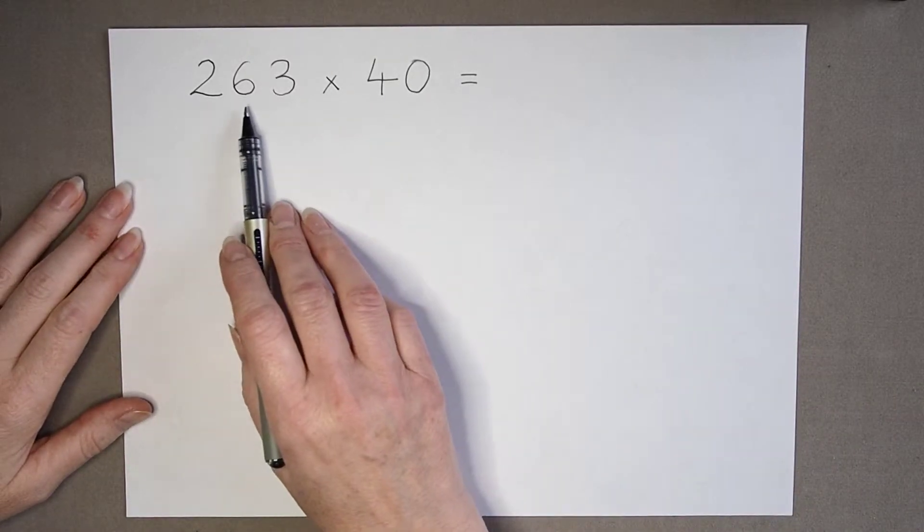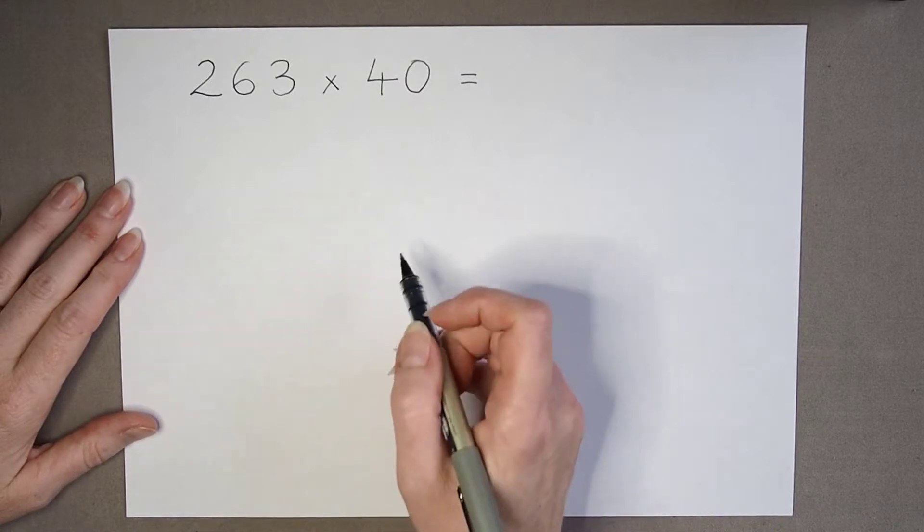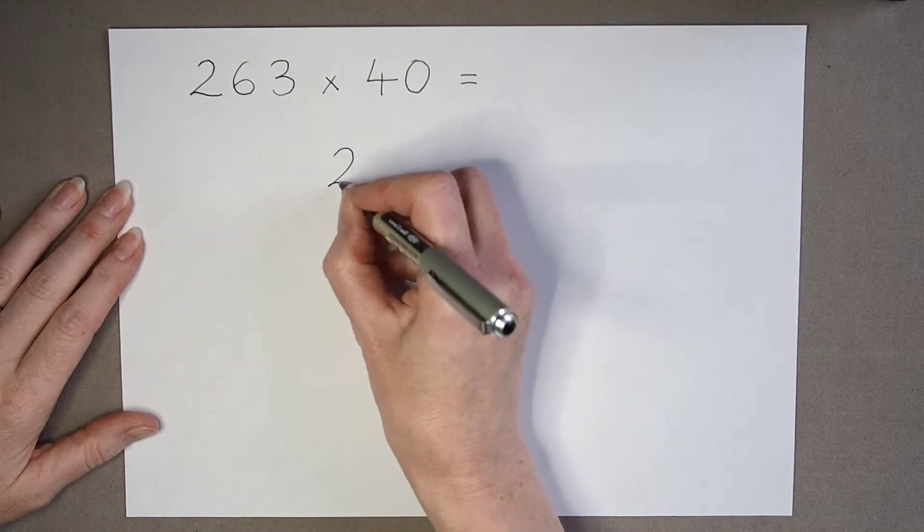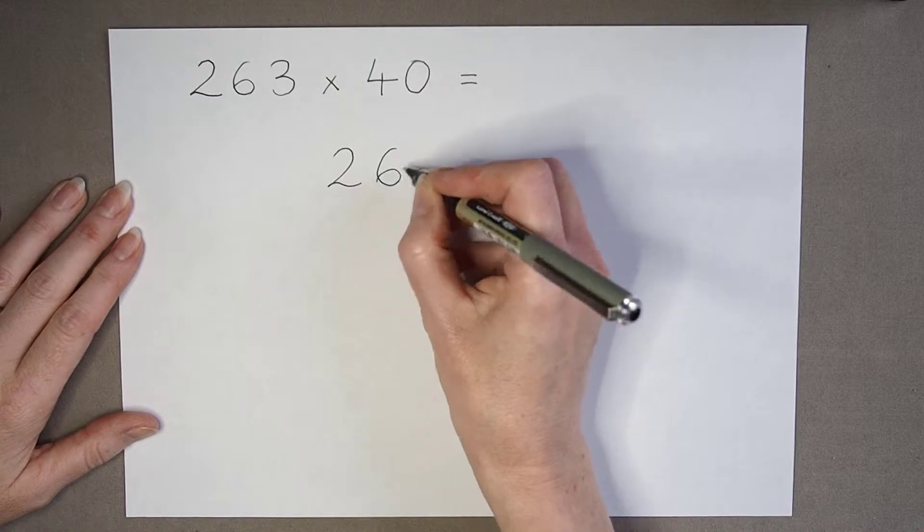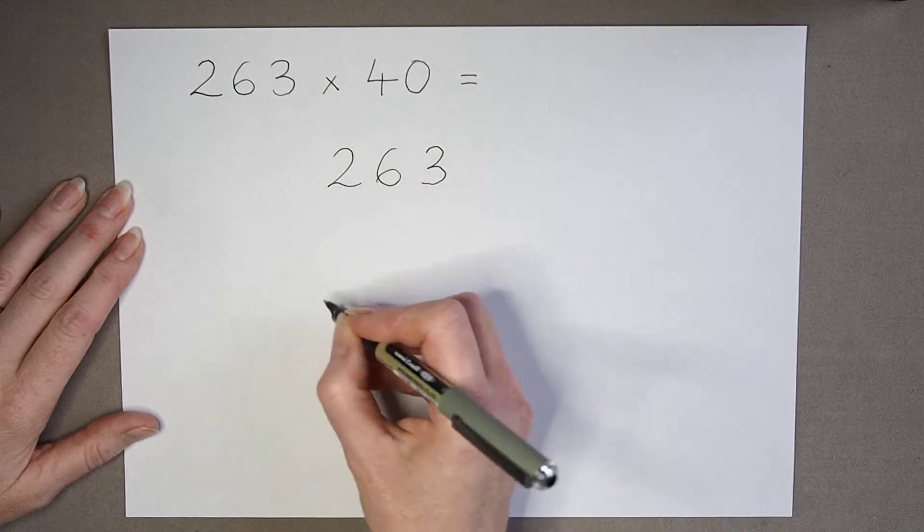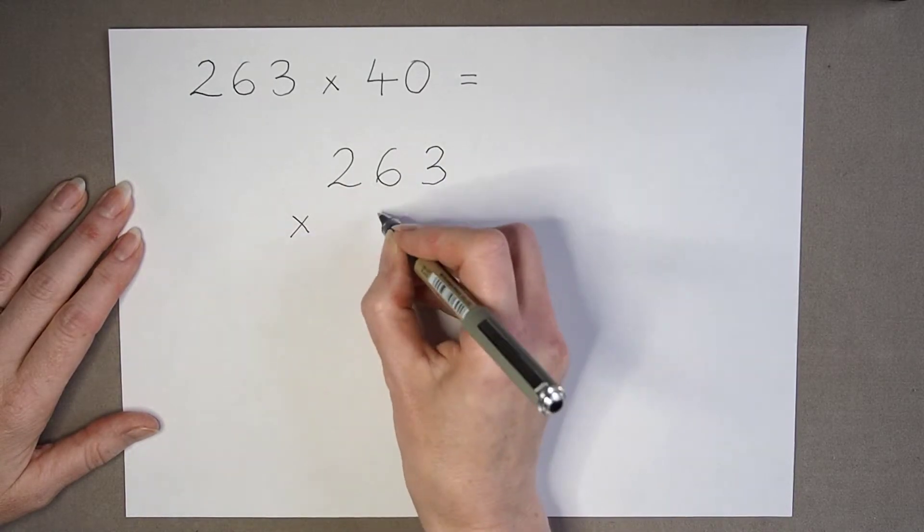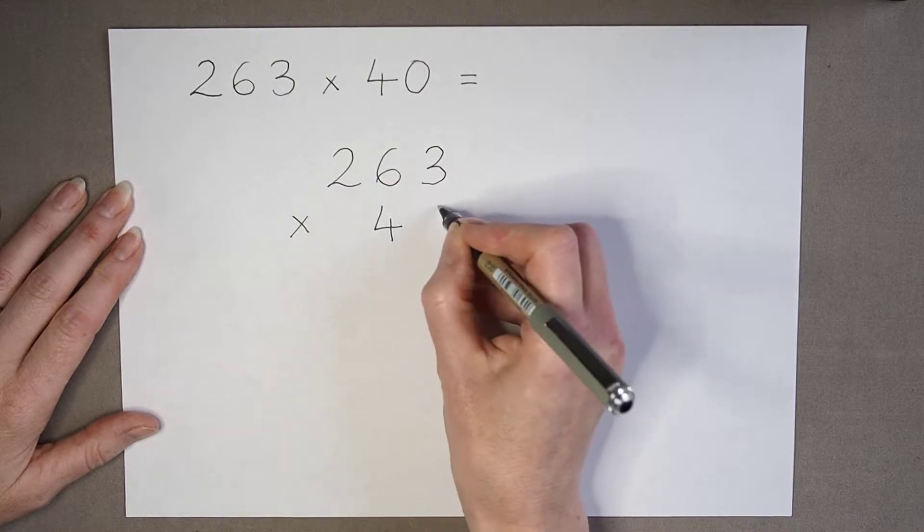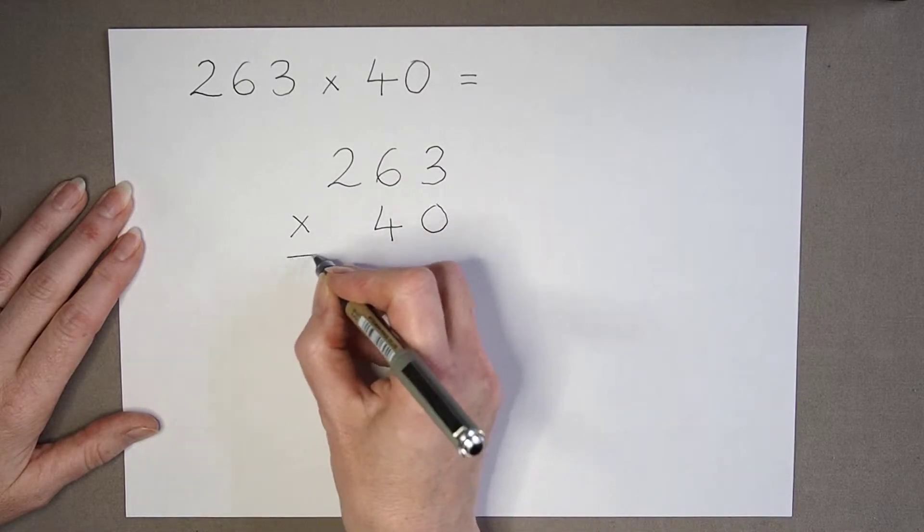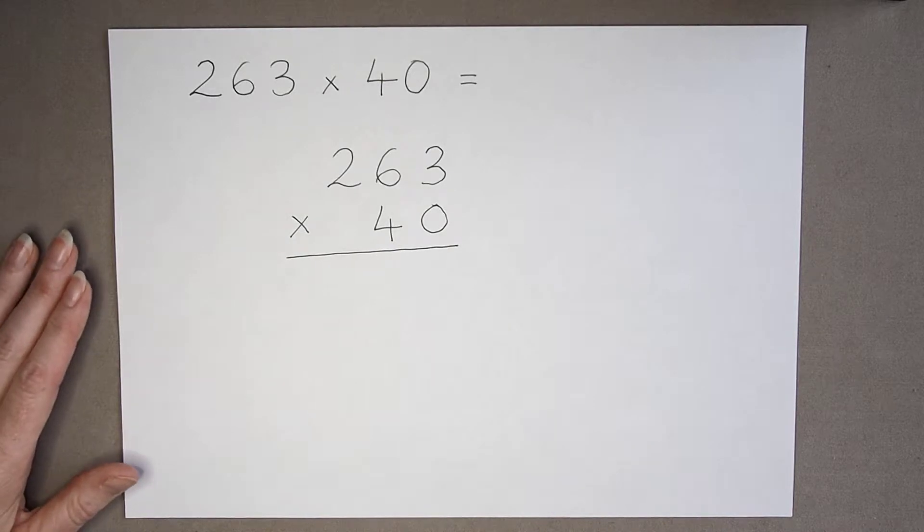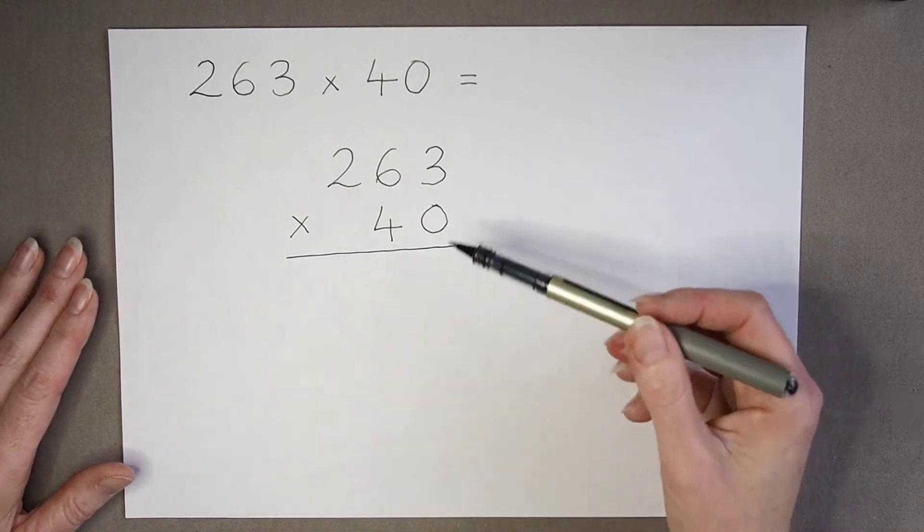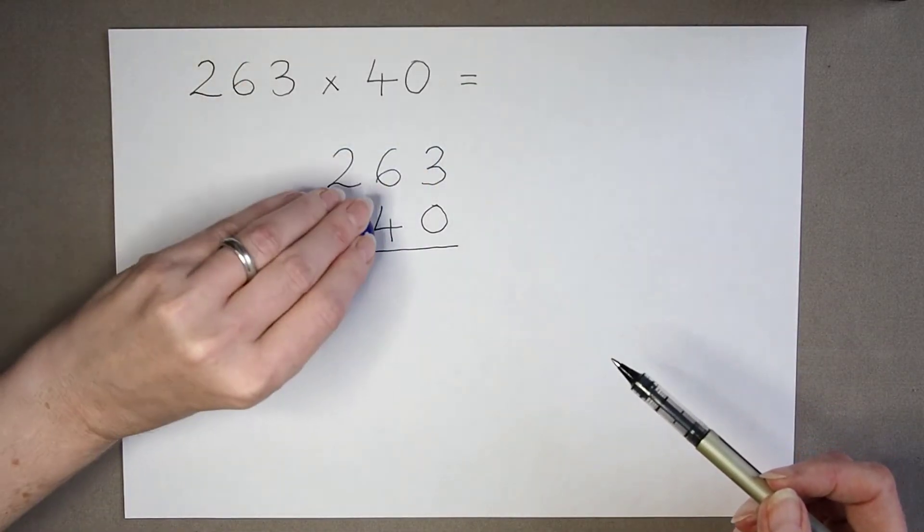So in this calculation, 263 multiplied by 40, I'm going to write out my calculation: 263 multiplied by 40. And as we know, we would normally start with the units.